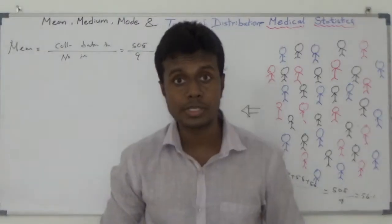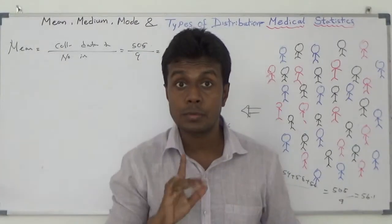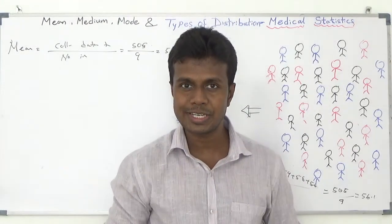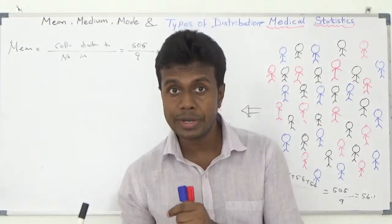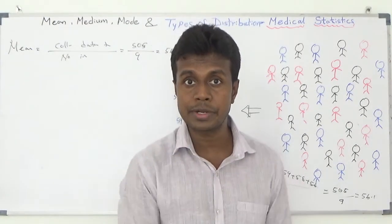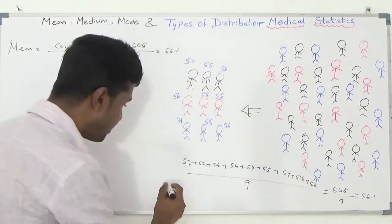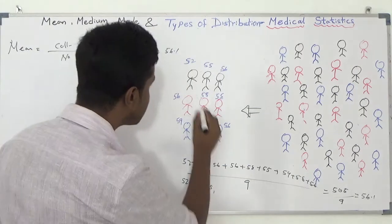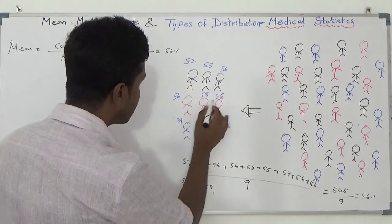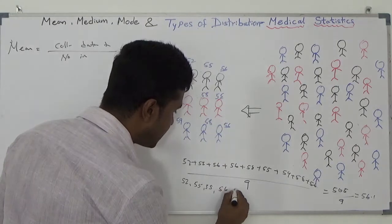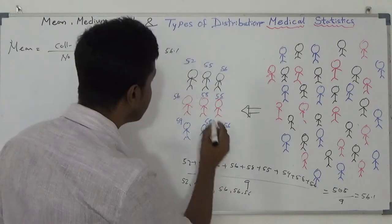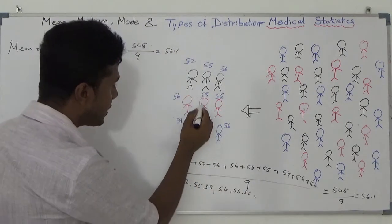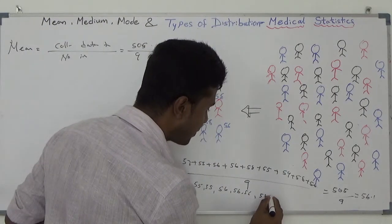Then I am going to check the most frequently appearing number in this group. For that, I am going to arrange the values in order from smallest to highest. The smallest number is 52, then 55 appears twice, then 56 appears three times, then 58 appears twice.